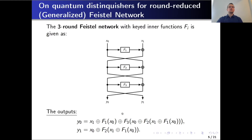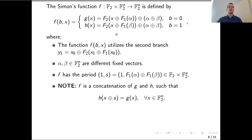Following the work of Kuwakado and Mori, the construction of a quantum distinguisher for a three-round Feistel network is based on observing the output branch y1. The main idea for constructing the Simon's function f is based on the method of concatenating two functions g and h. This means we query the encryption oracle quantumly two times, where once we plug vector x as a variable in the place of the x1 input block, and in the place of x0 we plug the values alpha and beta.